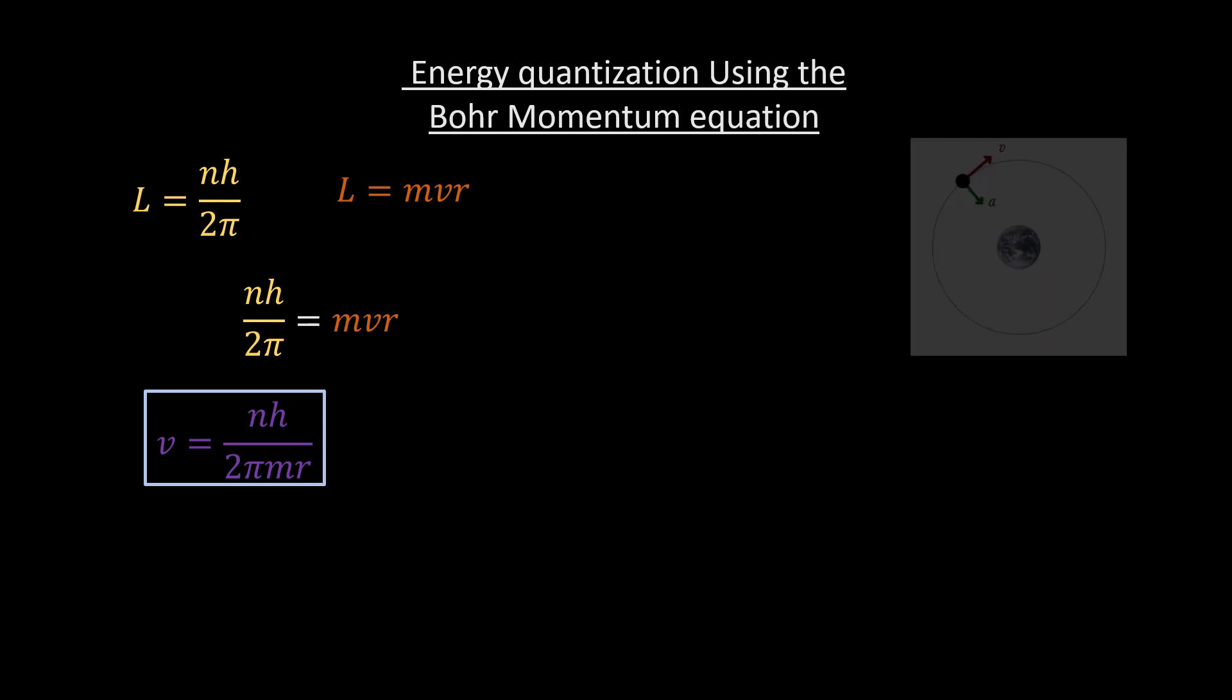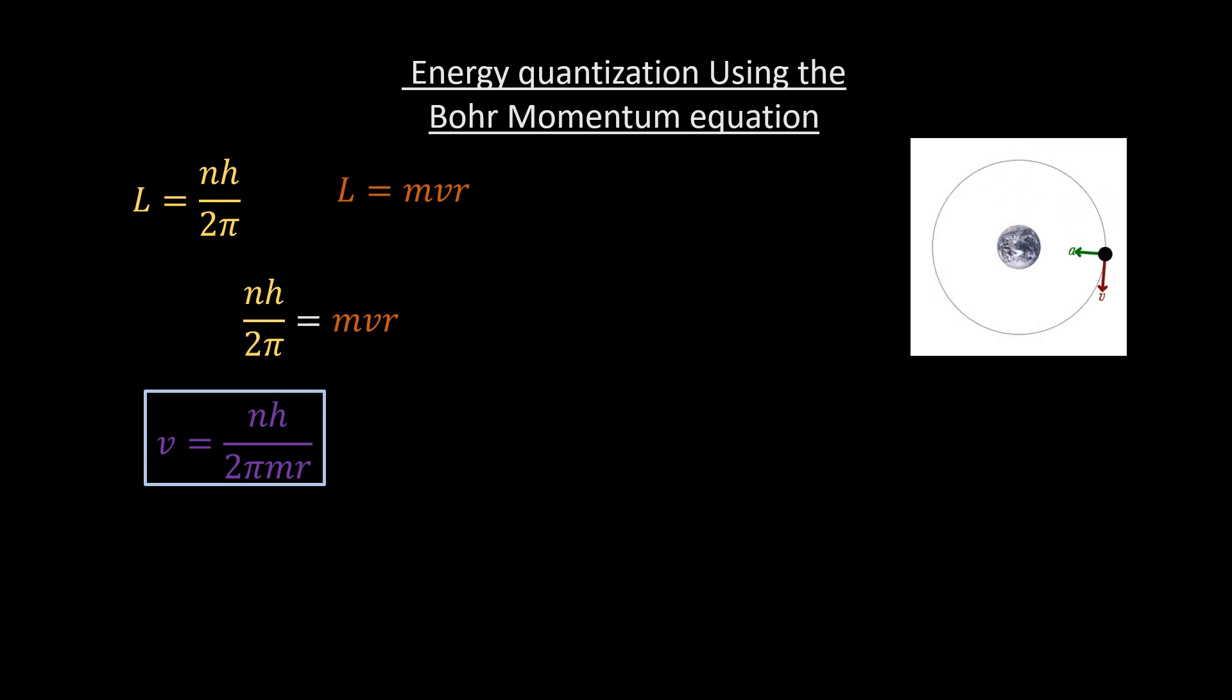For an electron going round a nucleus, there is a centripetal force given according to Newton's second law as follows. The centripetal acceleration, A subscript c, is given as follows. Therefore, we can write the centripetal force as this. This centripetal force is the electrostatic force of attraction between the electron and the positively charged nucleus, and is given by the following equation. Equating the two equations produces the following equation, and rearranging for v squared gives this.